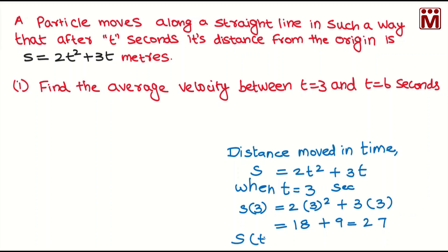When time is equal to 6 seconds, we calculate the distance. 2 into 6 squared is 72, plus 3 into 6 is 18. 72 plus 18 is equal to 90. So s of 3, that is at 3 seconds, is 27 meters. S of 6, at 6 seconds, is 90 meters.